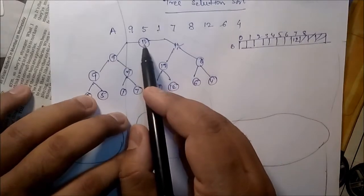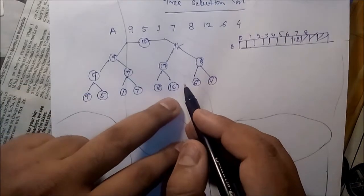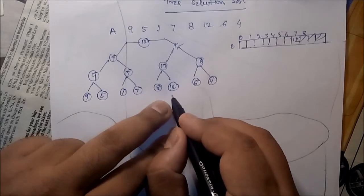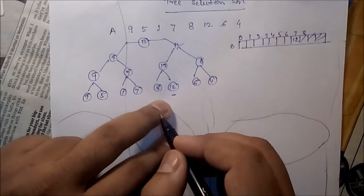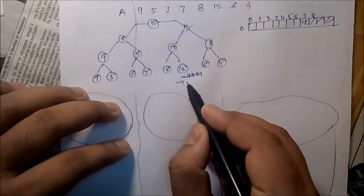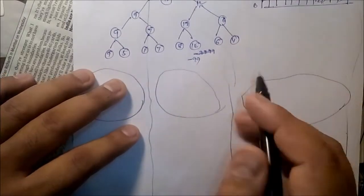Now, once we have selected 12, then now keep it, say, assume it is, say, dash, or nothing is there. Or assume minus 99.